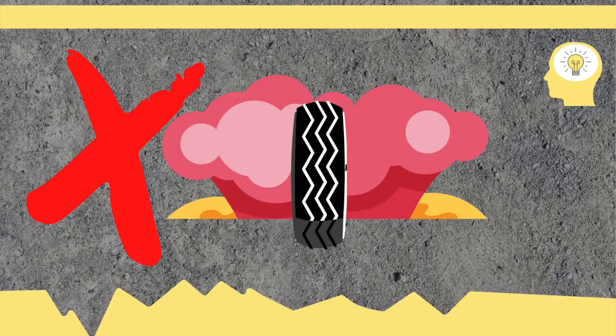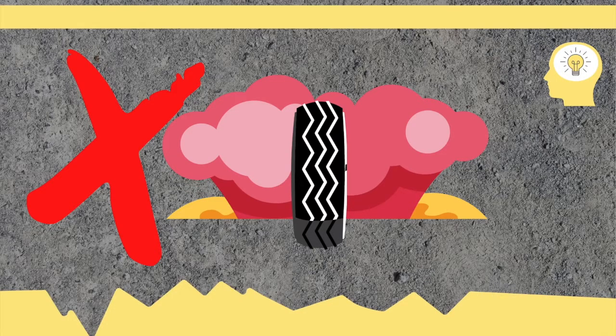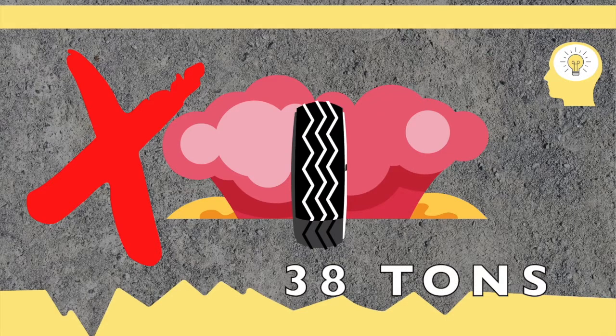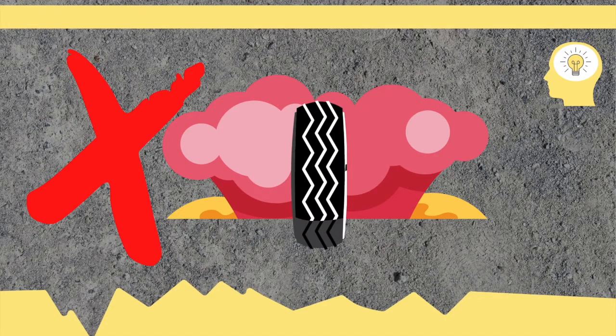Why don't airplane tires explode when they land? Because they are pumped up — just like the tires on your car, but way stronger. The typical airliner tire can handle a 38-ton load. It can meet the ground 500 times before needing a retread, and can be retreaded up to seven times in its life.